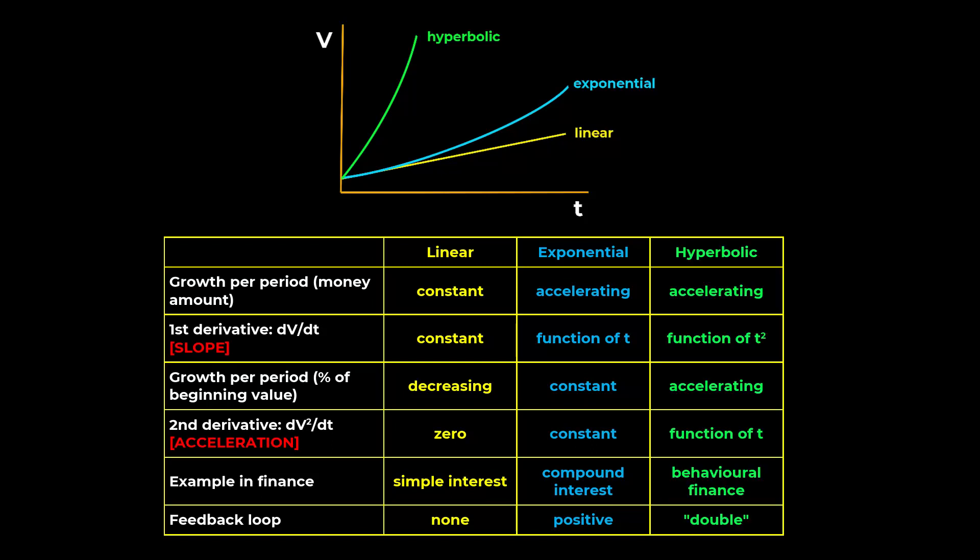Hyperbolic growth is also curved, but is steeper than exponential growth, all else being equal. So money value growth accelerates each period just as in exponential growth, but at a faster and faster pace.